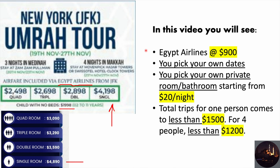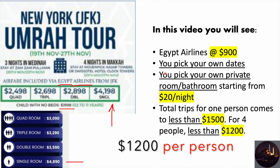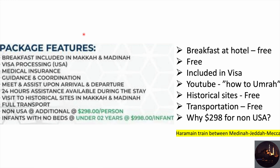Here are two examples of Umrah packages from JFK New York. The first one is $4,200 and the second one is $4,900 for single occupancy. If you do this yourself it will cost you less than $1,500, and for four people less than $1,200, and on top of that you get to pick your own dates.